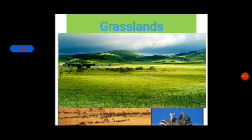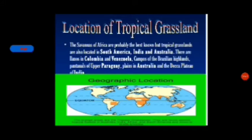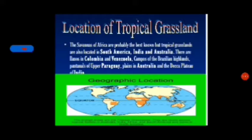At first we will come to know about tropical grasslands. Tropical grasslands are also known as savannah grasslands, found in north and south of the Congo Basin of Africa, parts of Brazil, the Guyana Highlands, the north and east of the Australian desert, and parts of the Deccan Plateau in India.